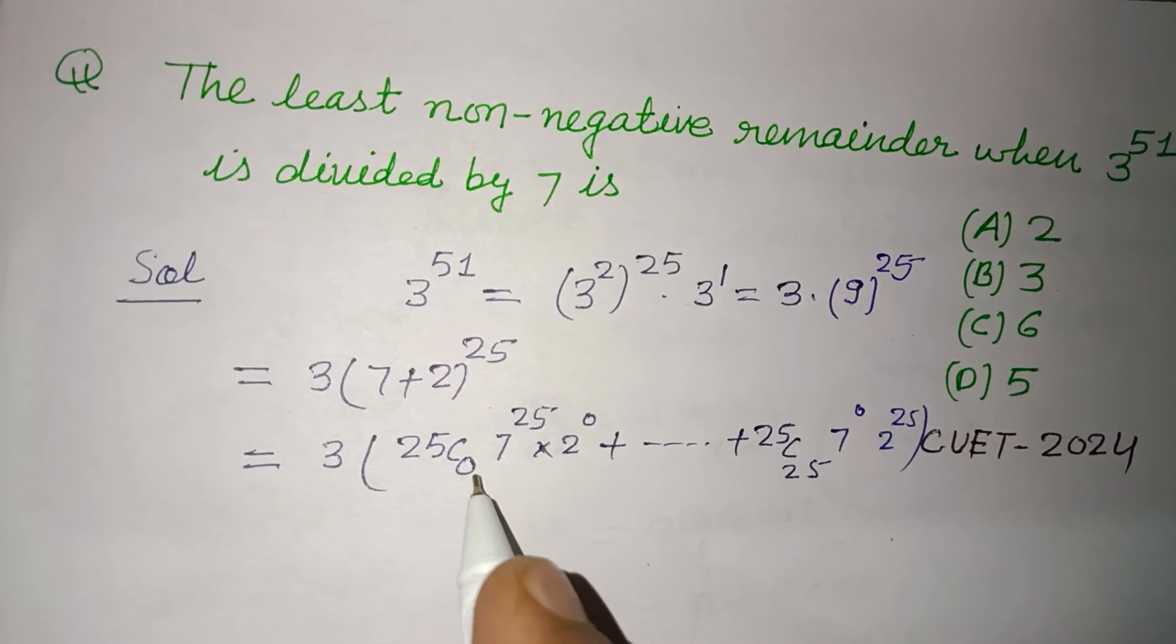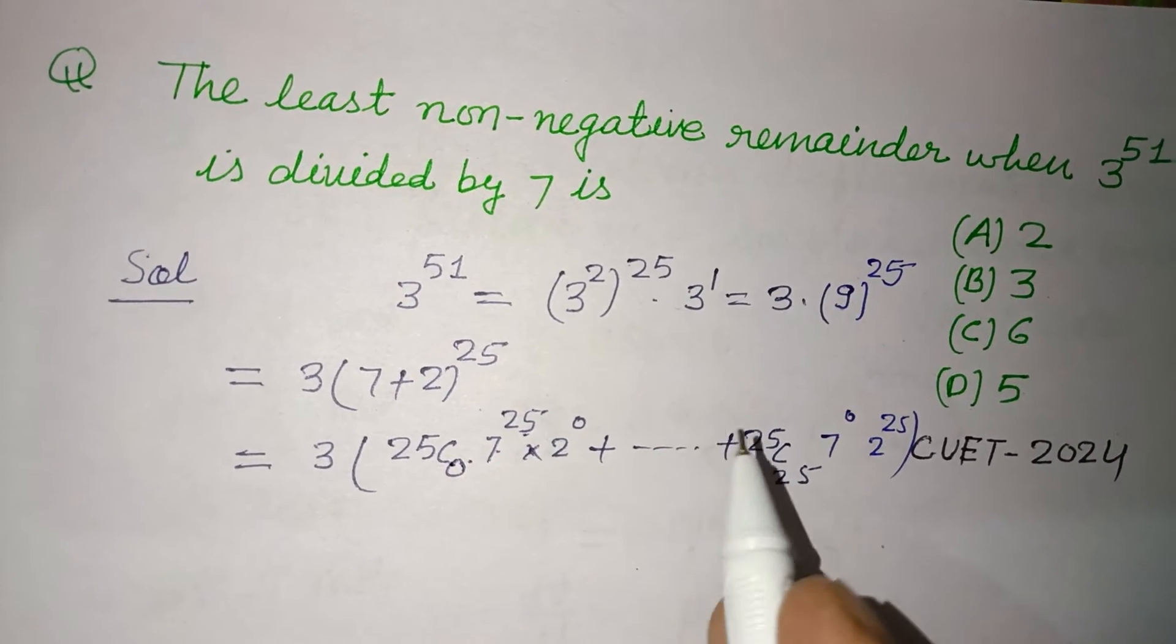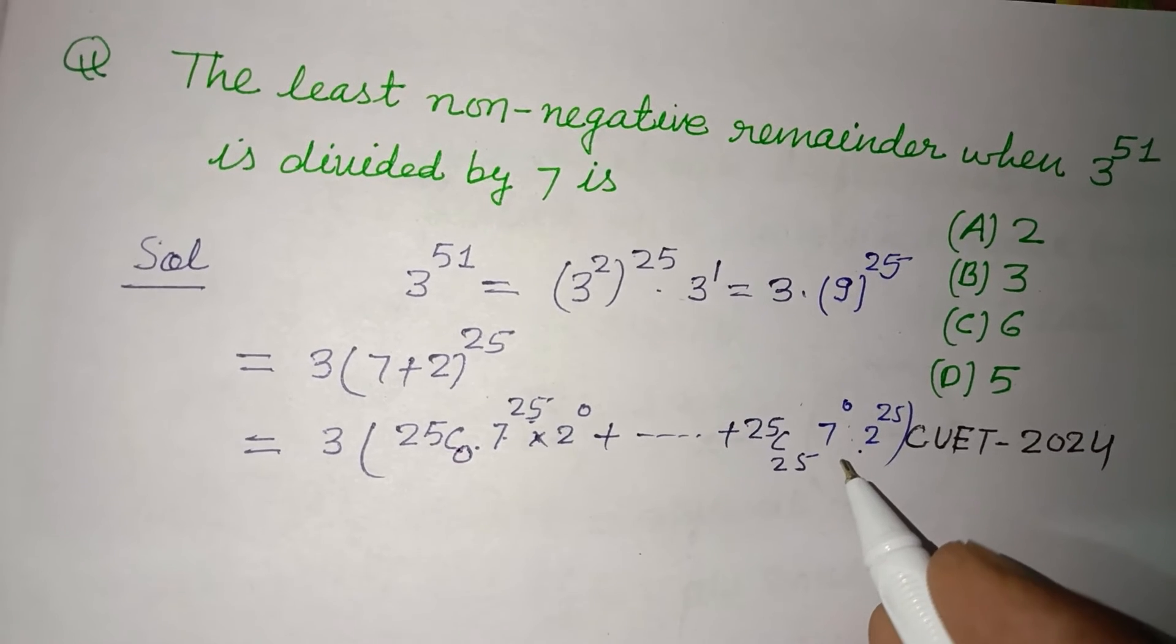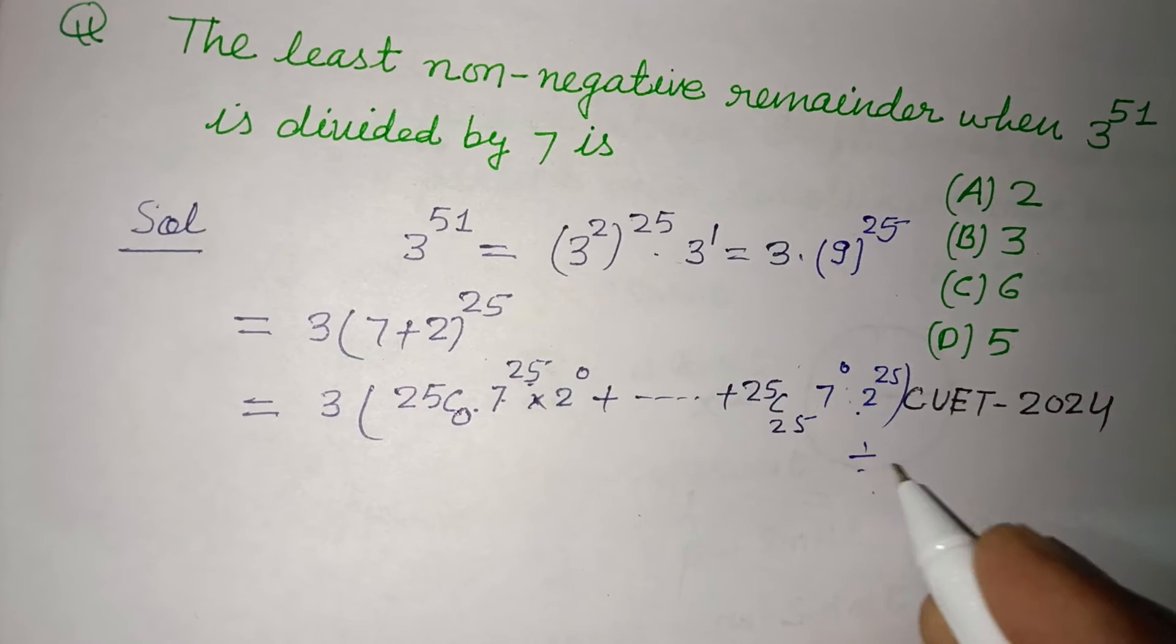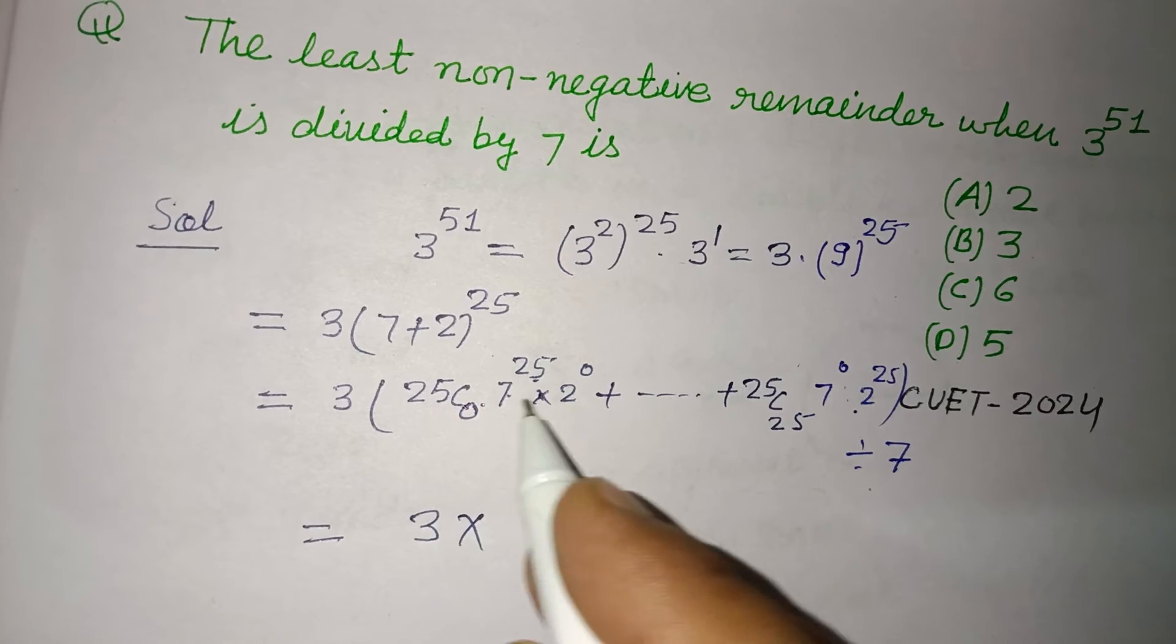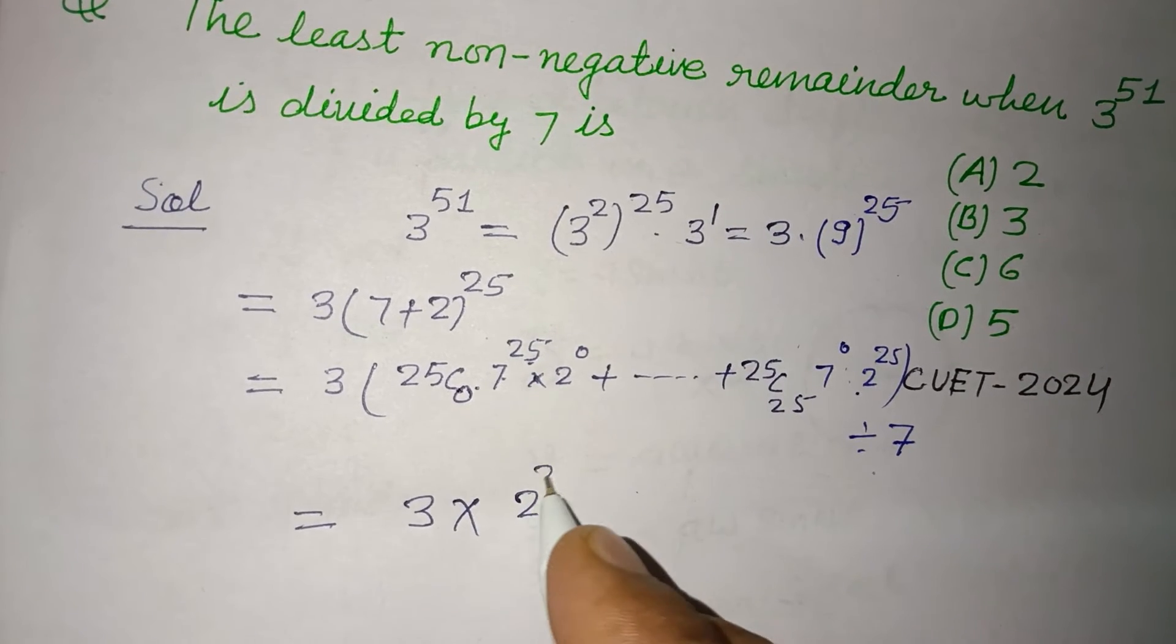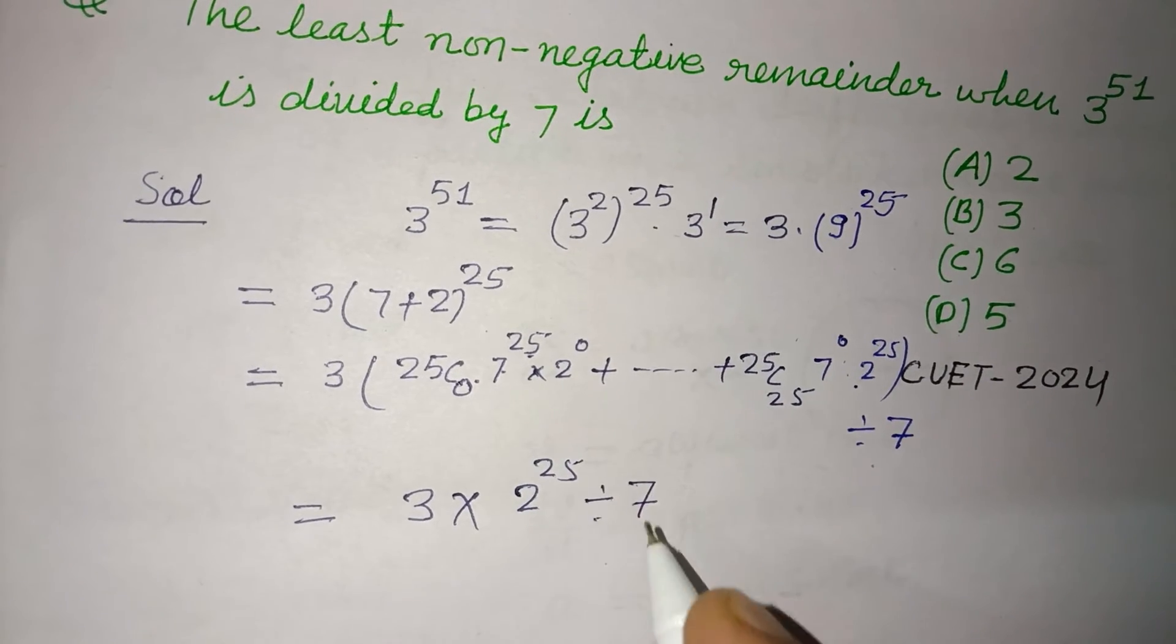Each term contains a factor of 7 (like 7^25, 7^24, etc.), but the last term has no factor of 7. When we divide this by 7, we get 3 times, and all these terms are divisible by 7 except the last one. So we need to find 2^25 divided by 7.